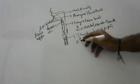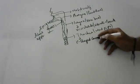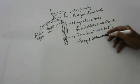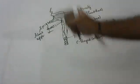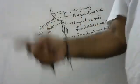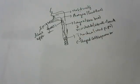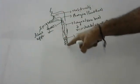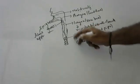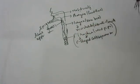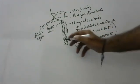The trachea has C-shaped cartilaginous rings to prevent it from collapsing. You can feel these rings at the junction of your neck — press lightly up and down and you can feel the rings. The trachea does not collapse because it has C-shaped cartilaginous rings. This is asked in exams many times.